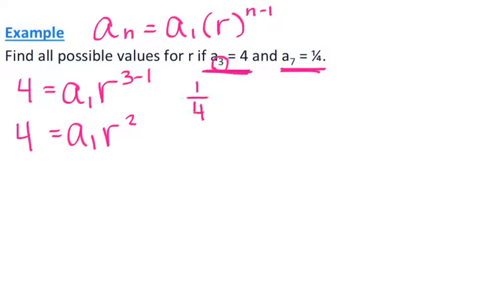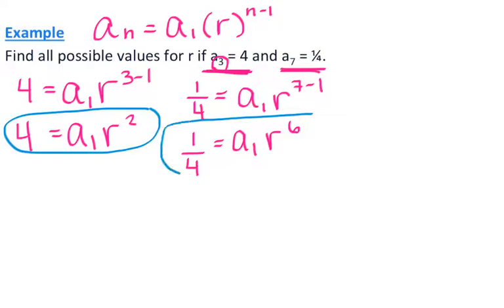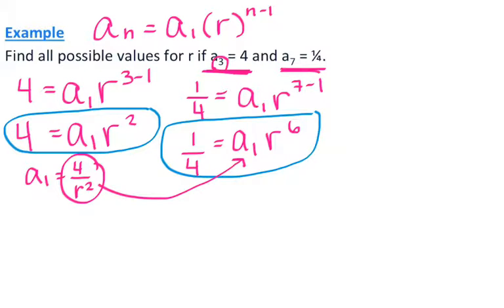For my seventh term, one-fourth, n is 7, so I have one-fourth equals a_1 times r to the sixth. What we have here is a system of equations. I'll solve the first equation for the first term: a_1 equals 4 over r squared. Then I substitute that into the second equation, giving me everything in terms of r. r to the sixth over r squared is r to the fourth.